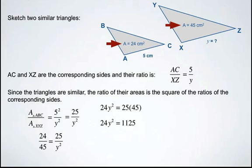We'll simplify this a bit. 25 times 45 is 1,125, and now to get y squared all by itself you need to divide both sides by 24. So 1,125 divided by 24 will give us 46.875.